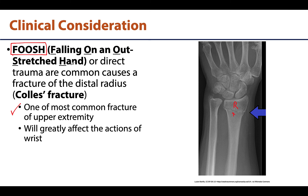Depending on how you fall, force is transmitted to different bones. In this case it is transmitted to the distal radius. When falling, the natural reaction is to put your hand out to break the fall and prevent landing on your face — a very common mechanism for upper extremity fractures. Since this fracture directly affects the distal radius, it can greatly affect wrist joint movements and can also affect the ligaments and tendons in this area.